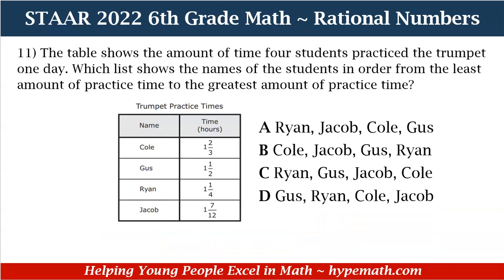Now let's dive into our problem — and again, you can purchase our workbook in our store so that you can follow along. Number 11 says: the table shows the amount of time 4 students practiced the trumpet one day. Which list shows the names of the students in order from the least amount of practice time to the greatest amount of practice time?